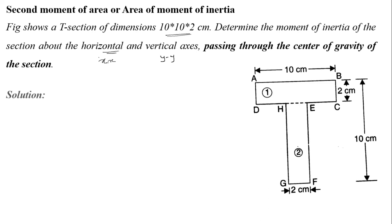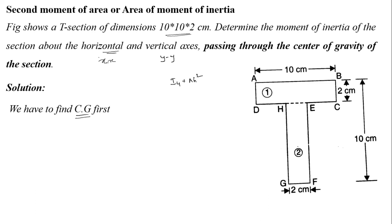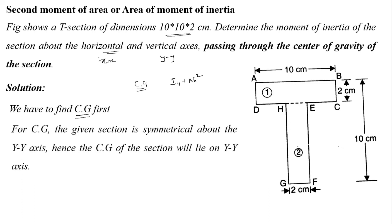First, we have to calculate the center of gravity (CG). The moment of inertia of the section equals IG plus AH squared — this is the formula for the parallel axis theorem. The given section is symmetrical about the YY axis, so we need to calculate Y-bar only.